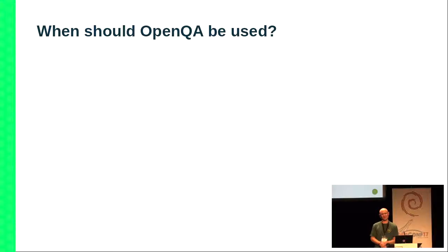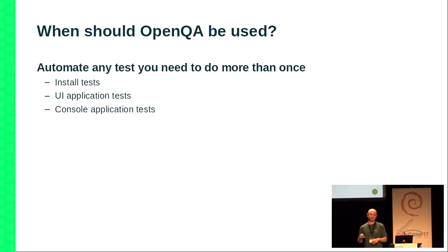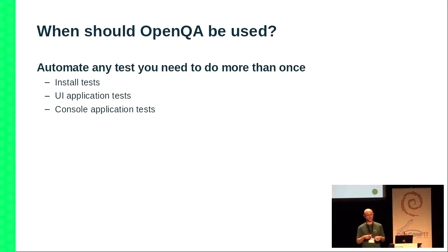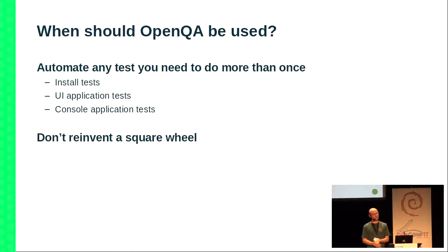When should you be using OpenQA? Whenever you want to run a test more than once and you expect the same results. Install tests are a perfect example — they're pretty boring, you always type the same things, click the same things, and expect the same answers. UI application tests are also possible: boot the system to the desktop, install the application inside the system, and then you can do everything a user can do. Console applications work the same way — you can use serial console for text input/output, or screen if you prefer.